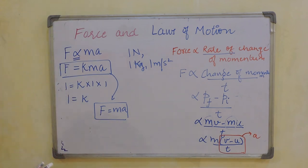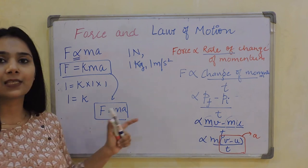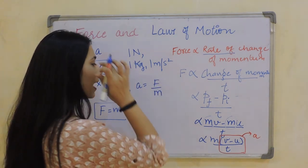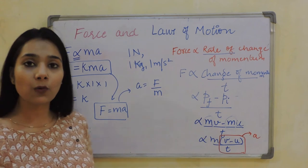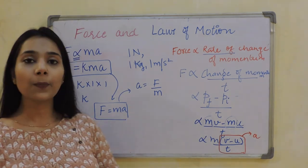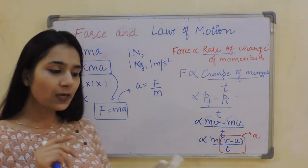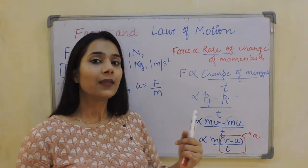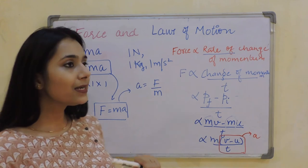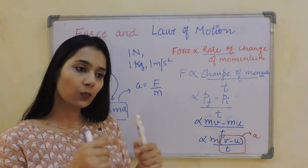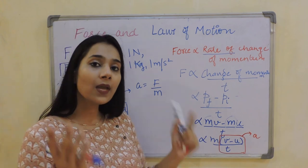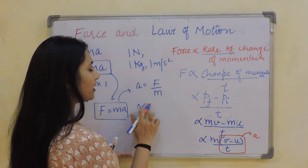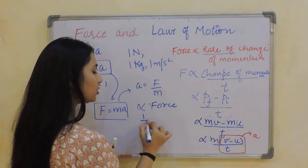According to this, the force applied on an object is the product of its mass and acceleration. From this, A = F/M — acceleration is directly proportional to the applied force and inversely proportional to the mass. That is why it is easier to accelerate a small car than a big truck when applying the same force.